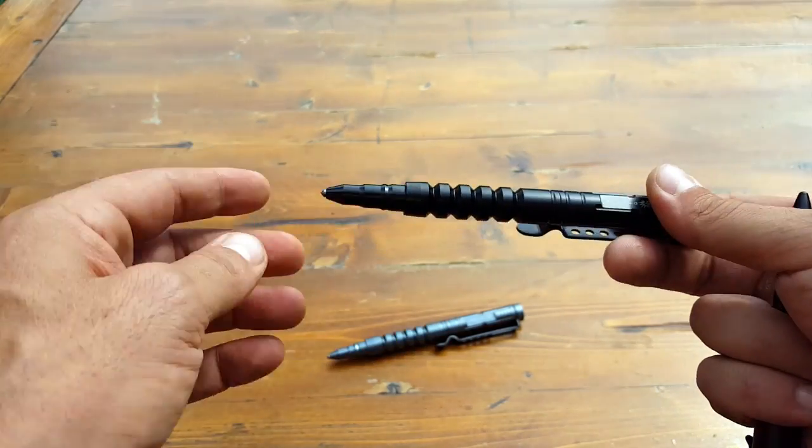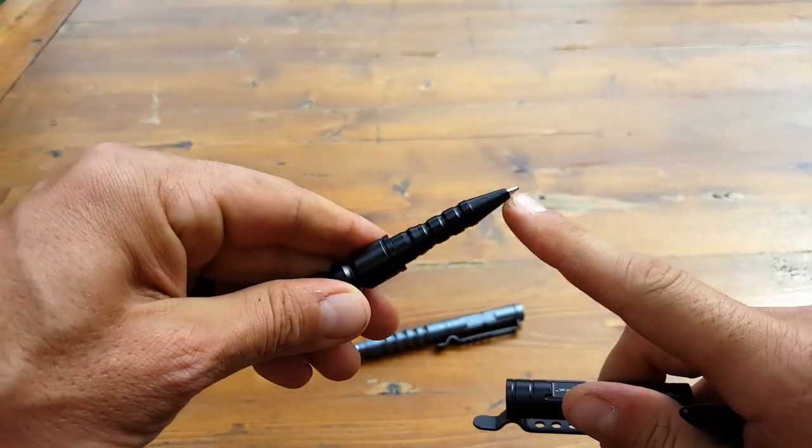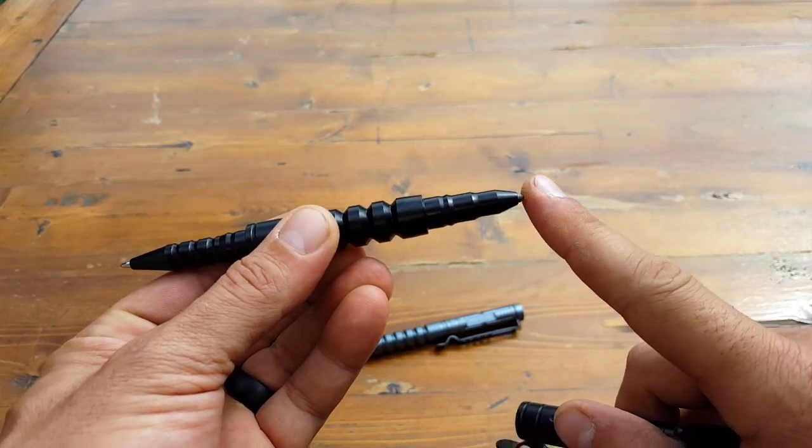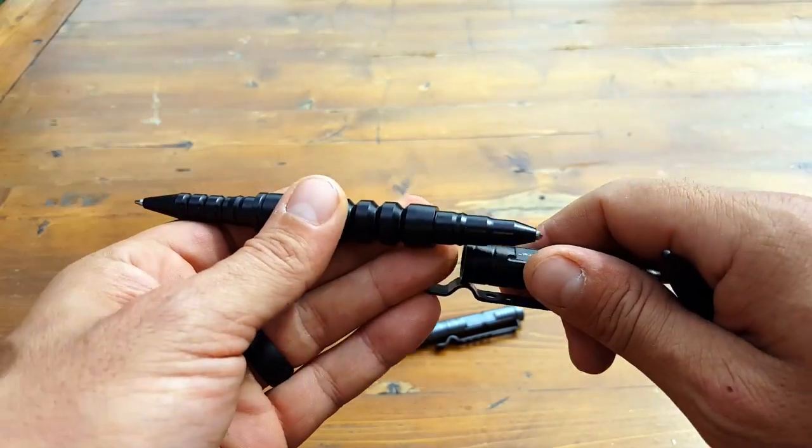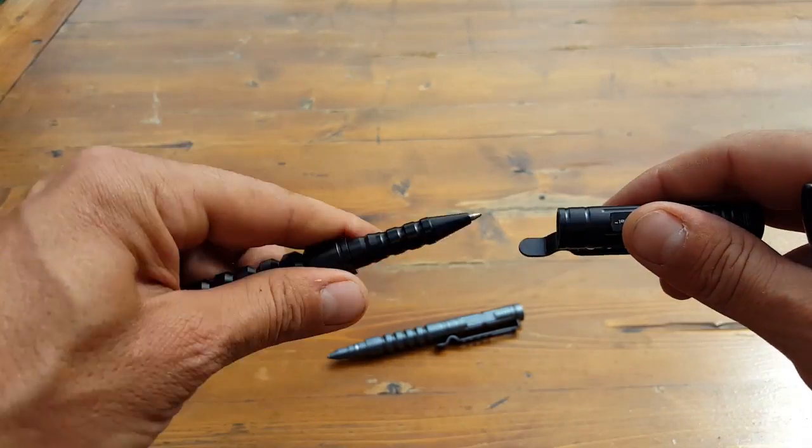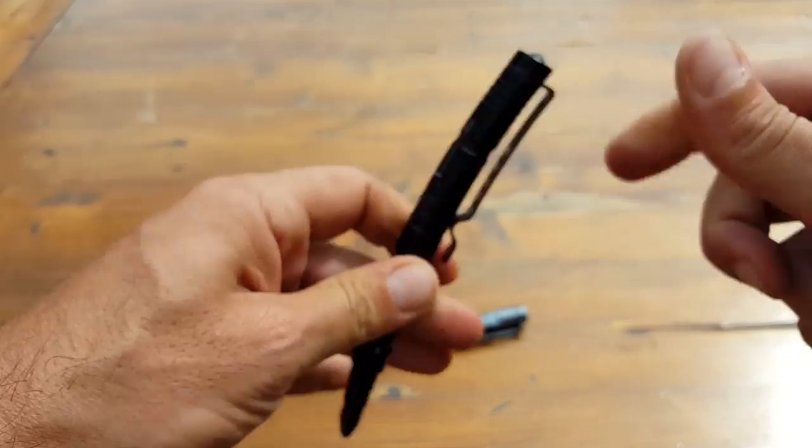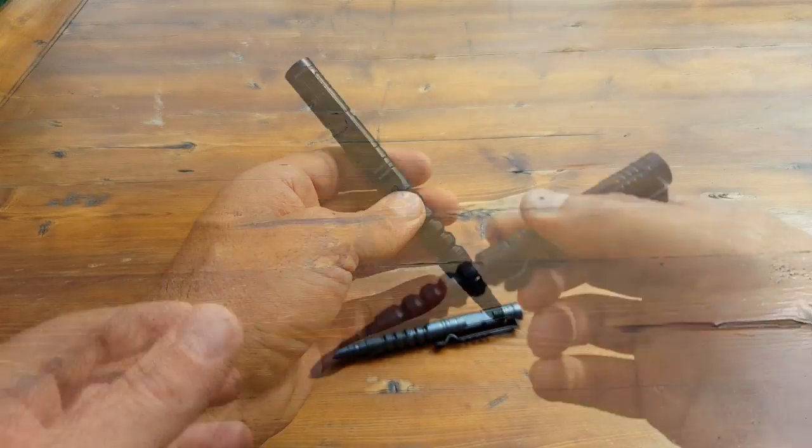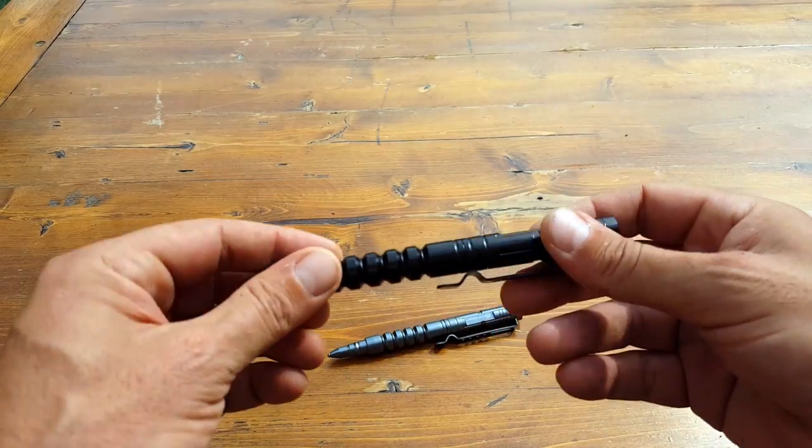Just something to think about here because you can't really cover this end. If you were to open up the pen you got your writing end, you got your glass breaking end, so whatever you cover, something's always going to be exposed. So keep that in mind. One of the reasons why I opt to keep this in my go bag.